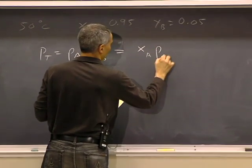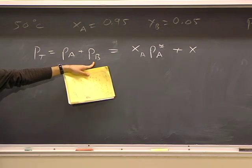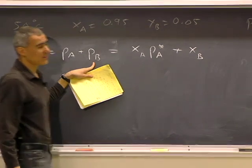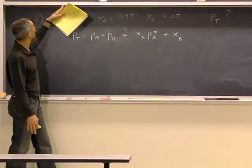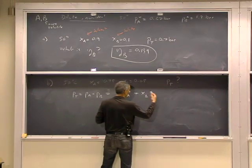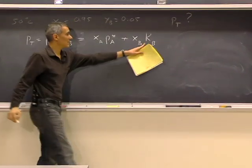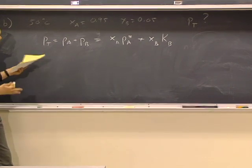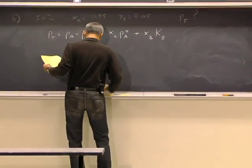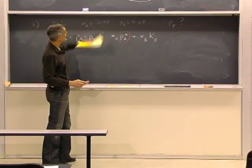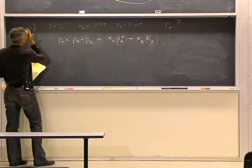P_A is going to be proportional to Raoult's Law because it's the solvent — so it's X_A times P*_A. P_B is going to be proportional to the mole fraction, but because B is the solute seeing mostly A molecules, it won't obey Raoult's Law. It obeys Henry's Law: P_B = X_B times K_B. We know P*_A, but we don't know K_B. We can get it from part A, since we have all the information we need there.